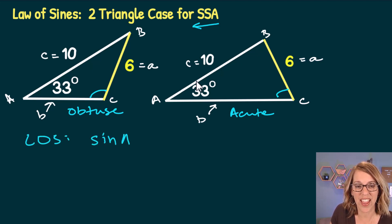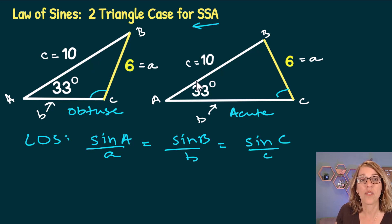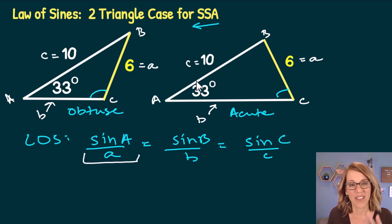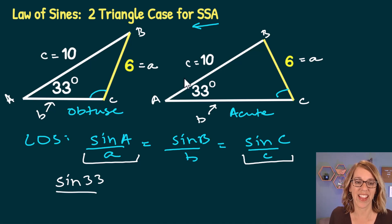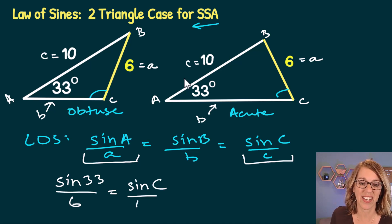The Law of Sines gives us these proportions: sin(A) / a = sin(B) / b = sin(C) / c. We'll pick up the pair we have the most information for, which is angle A and side a. We don't have angle B or side b, but we do have side c. So we'll use sin(A) = sin(33°), side a = 6, and set that equal to sin(C) over side c, where side c = 10.